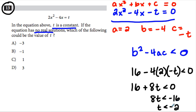So t has to be less than negative 2. And it says, which of the following could be the value of t? Well, less than negative 2 can't be any of these. So my answer has to be A. All right guys, hopefully that was helpful. Have a great day. Bye-bye.